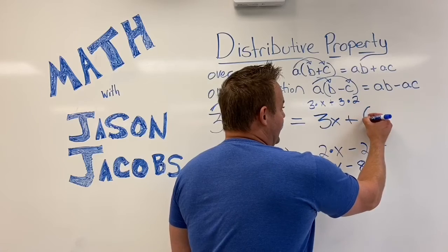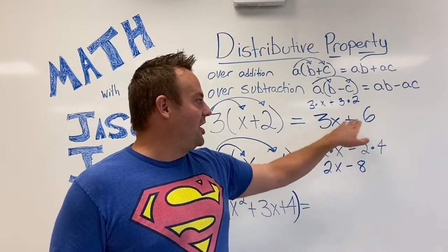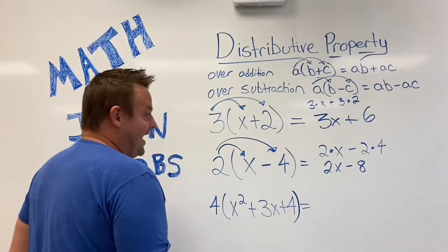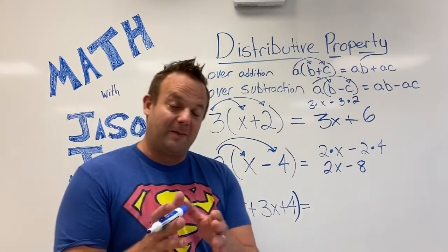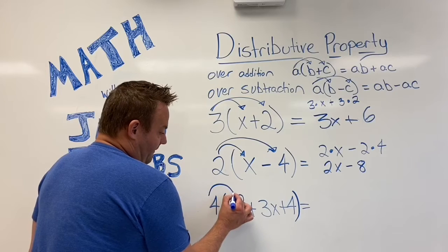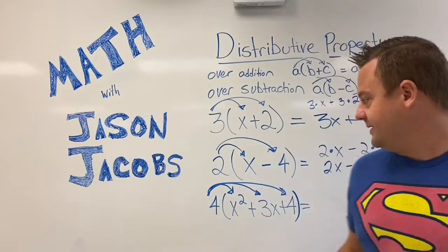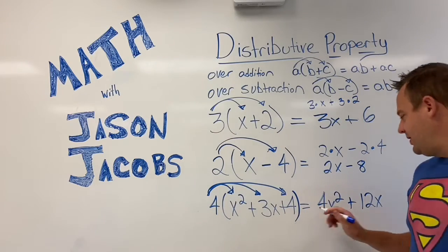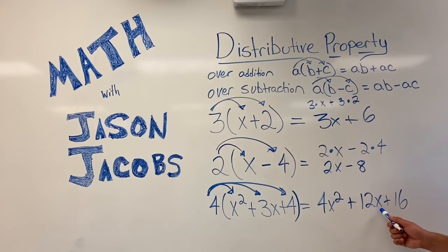A common mistake is that some people will say 3X plus 6 is 9X — wrong. These are unlike terms. Terms are separated by addition or subtraction. Now here's a more advanced one: notice we're distributing over three terms. The 4 distributes to X squared, the 4 distributes to 3X, and the 4 distributes to the 4. So 4 times X squared is 4X squared, plus 4 times 3X is 12X, plus 4 times 4 is 16. So we get 4X squared plus 12X plus 16. We can't combine these because each is a different term.